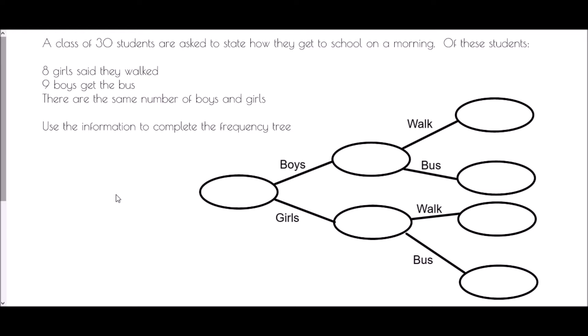Basically, it's a way of categorizing people if we are splitting them into more than one set of groups. So with the question that we have here, a class of 30 students are asked to state how they get to school on a morning. Obviously, this means that we are splitting up the class into boys and girls and then from there, deciding whether they walk or get the bus to school. And so the Frequency Tree is there for us to split the groups up into little individual categories.